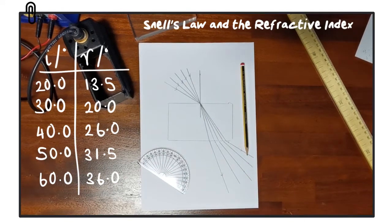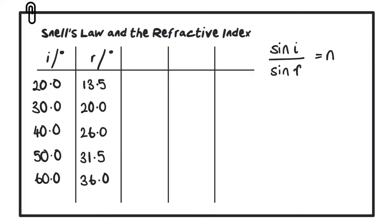Now we can process the results to verify Snell's law, which means showing that sin i over sin r is equal to a constant. We have values of i and r, so we need to calculate the sine of each. These go into the next two columns of our table: sine of the angle of incidence and sine of the angle of refraction. Calculate these values to three significant figures.